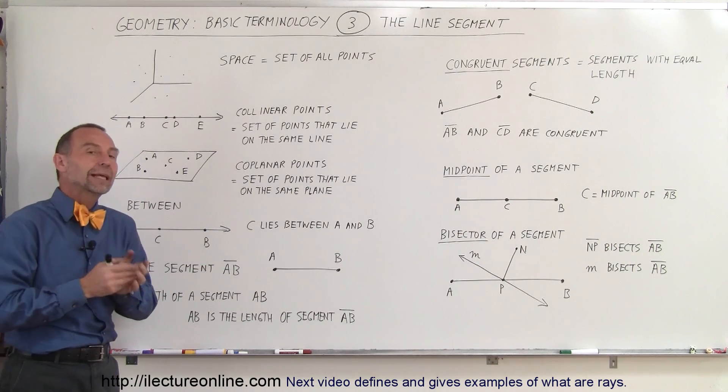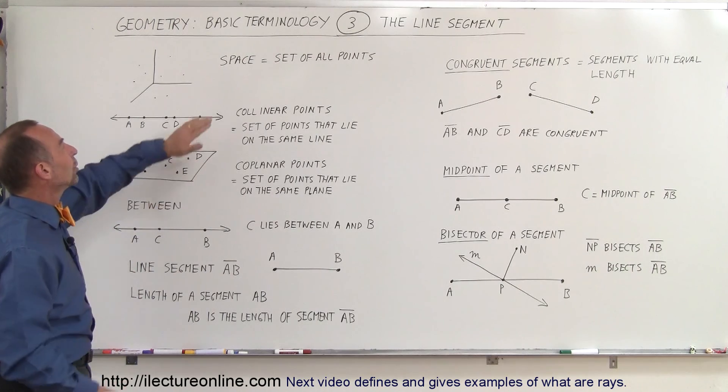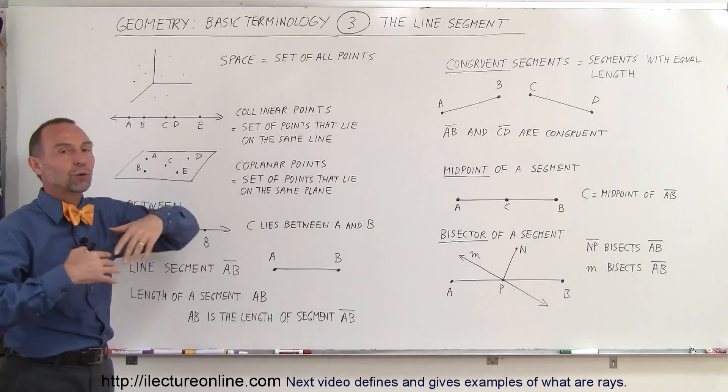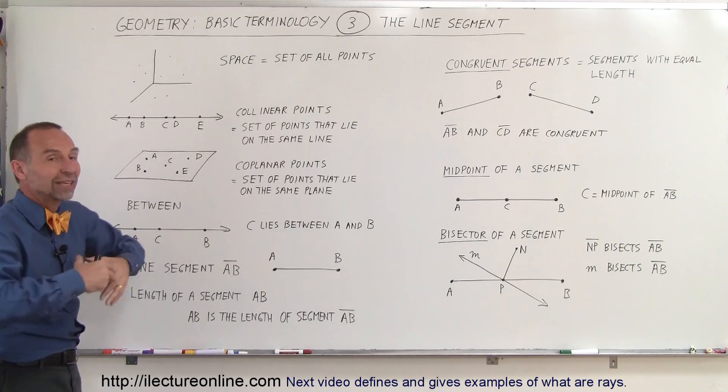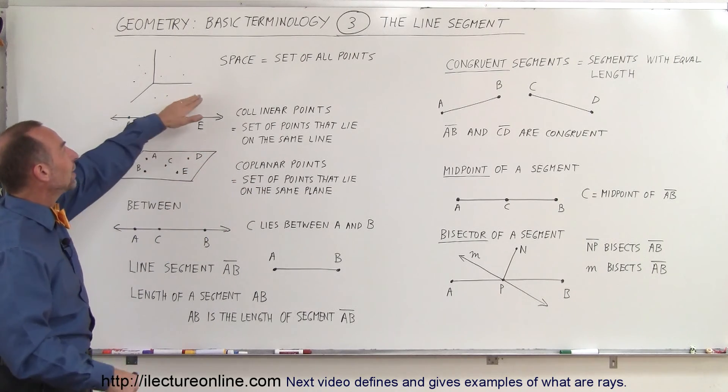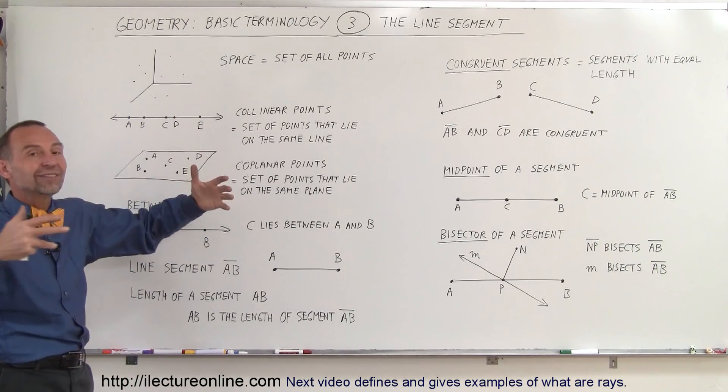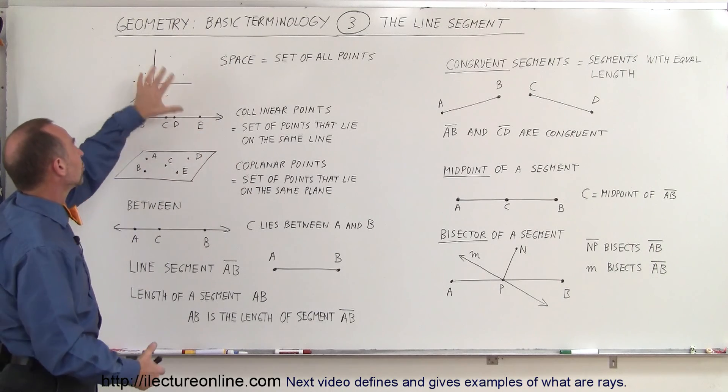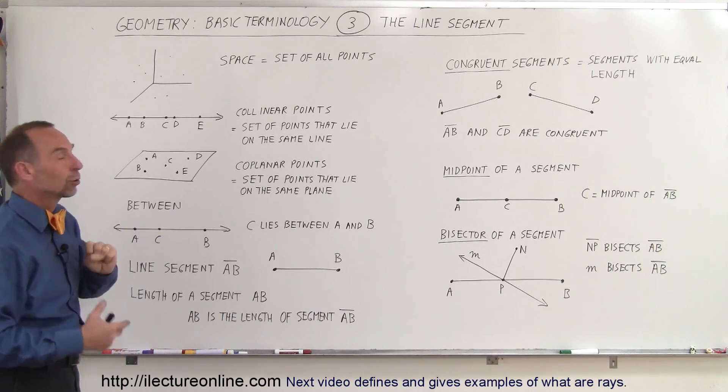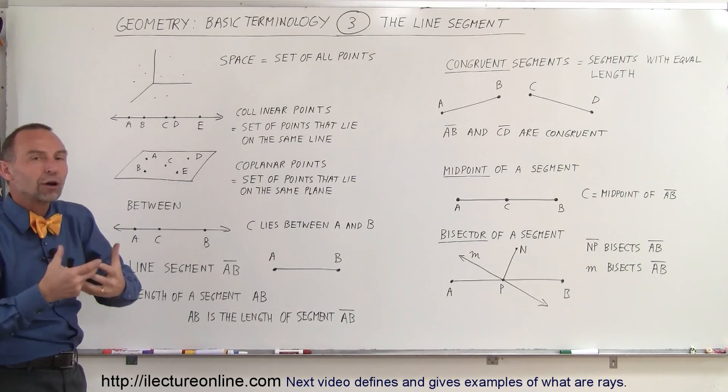So backing up a little bit, let's talk about what we call space. Space is the three-dimensional coordinate system x, y, and z in all directions, so space really represents all the points in space. Any point you can draw in the x, y, z coordinate system is therefore part of space.